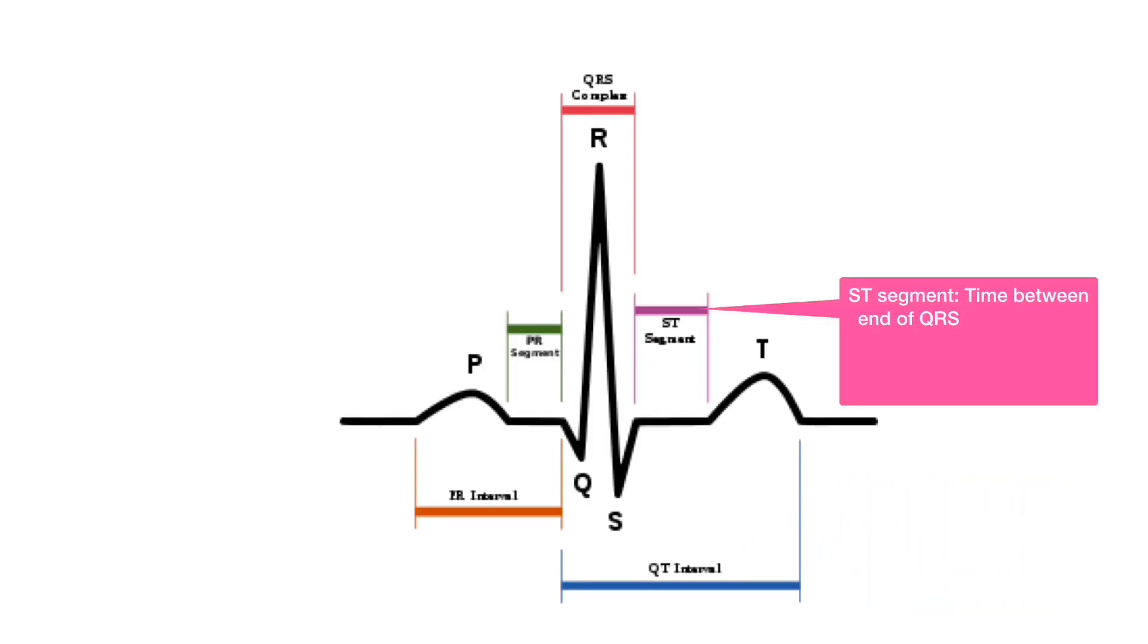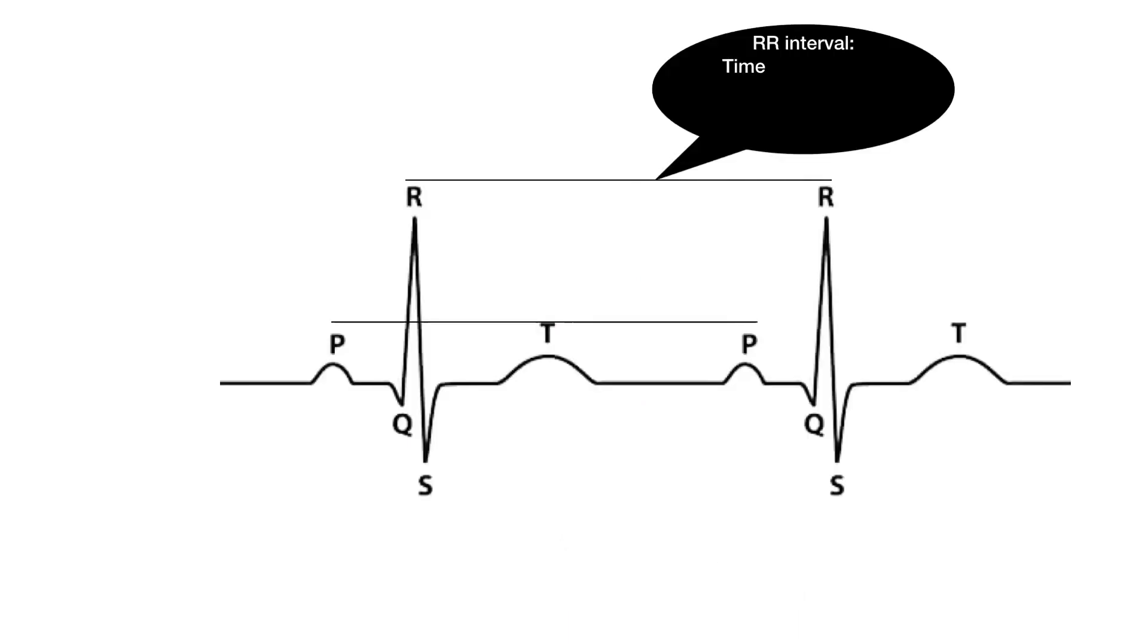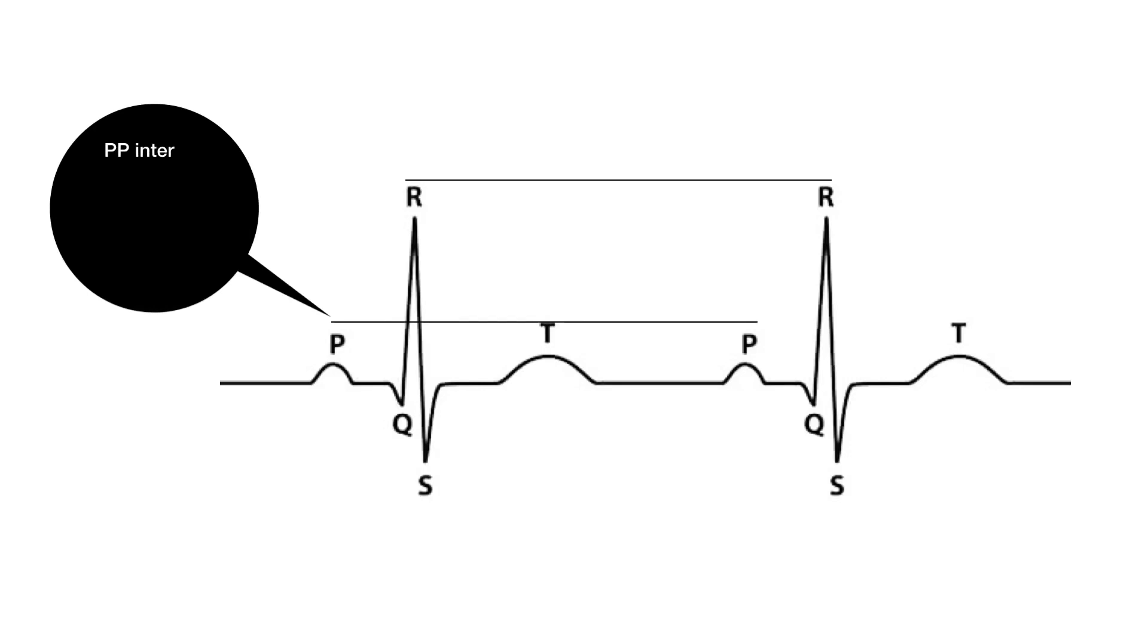The time between end of QRS complex and onset of T-wave is called ST segment which represents early ventricular repolarization. The time between apex of two subsequent R-waves is called RR interval which represents rate of ventricular contraction or heart rate. The time interval between onset of one P-wave to the onset of another P-wave is called PP interval which represents rate of atrial contraction.